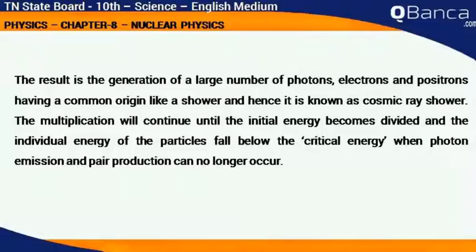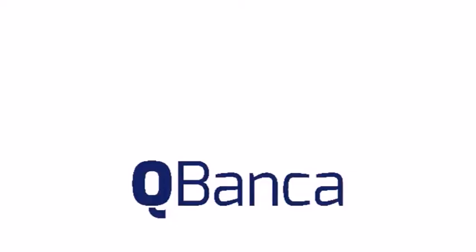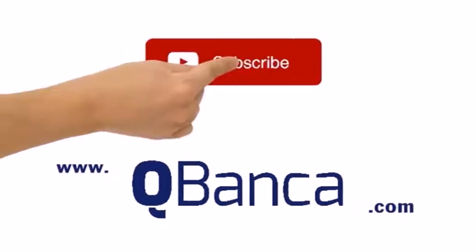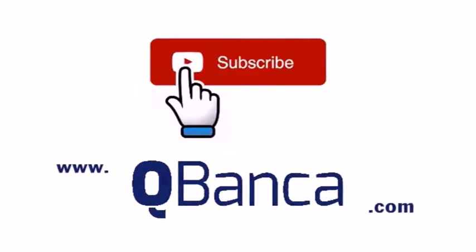The multiplication will continue until the initial energy becomes divided and the individual energy of the particles falls below the critical energy, when photon emission and pair production can no longer occur.